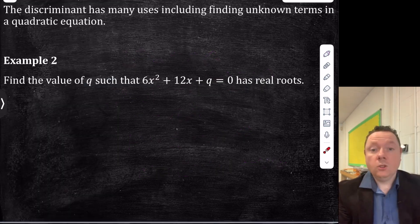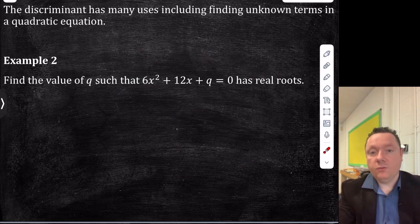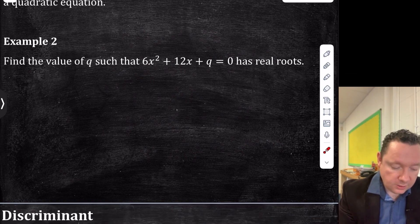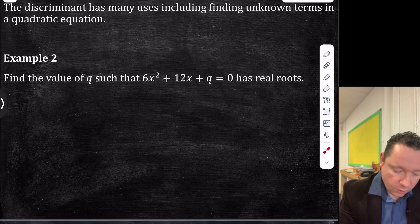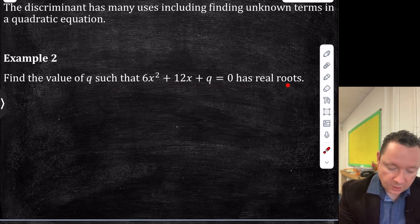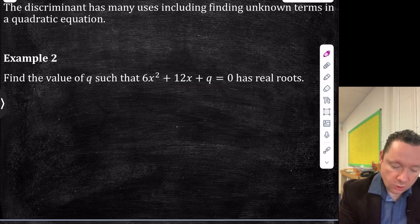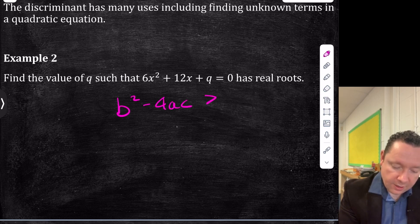So we can use the discriminant to find unknown terms if we know that the discriminant was real or not real or equal. For instance, example two says find the value of q such that this has real roots. So if it's got real roots, we can just say that b squared minus 4ac is greater than or equal to zero because it has real roots.